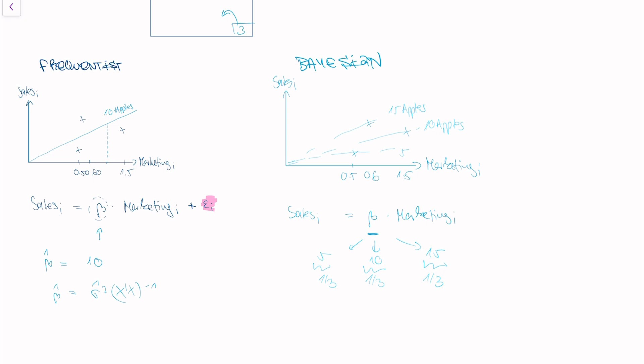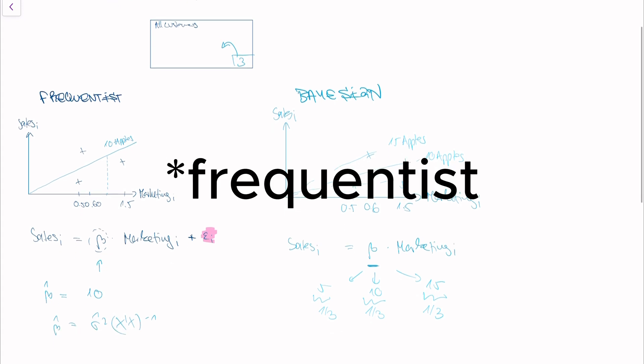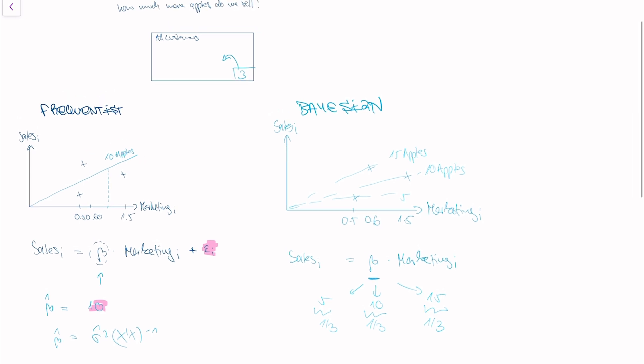So now if our CEO asks us if we spend one dollar on a customer how much more apples do we sell, the frequentist statistician would tell you based on the data well it will be about 10. That is estimated with some uncertainty but we think that the true parameter is 10. And the Bayesian statistician would tell you well based on our data I can tell you that for a third of our customers we will sell five more apples, a third we will sell 10 more apples, and for another third we will sell 15 more apples.